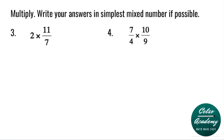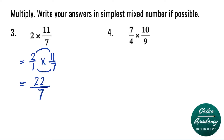Question number 3: 2 times 11 over 7. The whole number 2 is the same thing as 2 over 1, so times 11 over 7. Step 1, multiply numerators 2 and 11 — that's 22. Step 2, multiply denominators 1 and 7 — that is 7. Now we convert this improper fraction: how many 7s go into 22? 3 times — 3 times 7 is 21, remainder 1. So 22 over 7 is the same as 3 and 1 seventh.